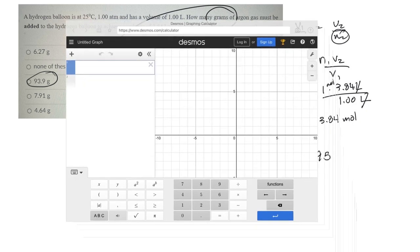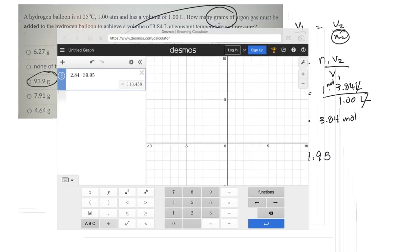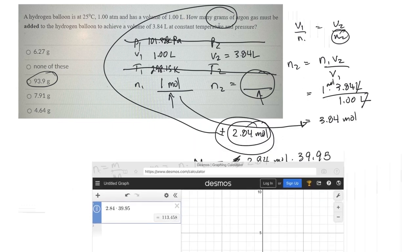So what do I have to do? 2.84 times 39.95. 2.84 times 39.95. Oh, I'm getting 113. I guess my only option here, because I thought it was a little bit higher, so it's not this one.